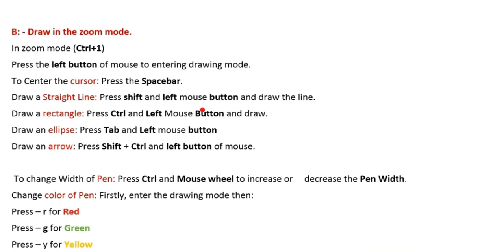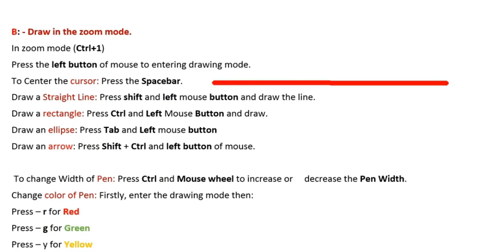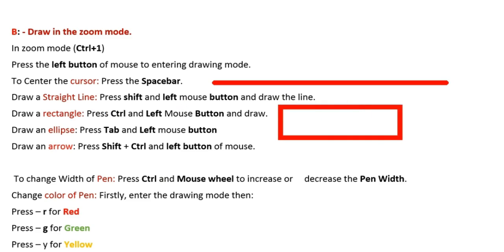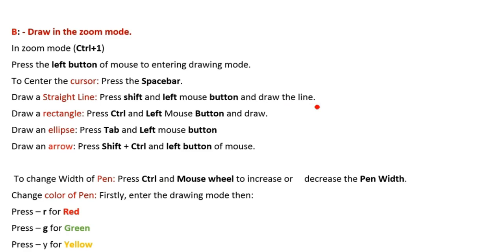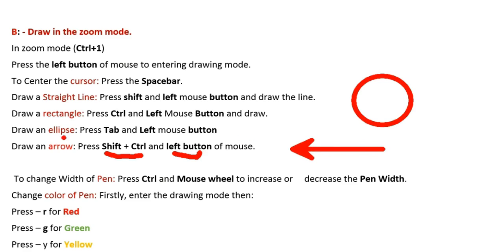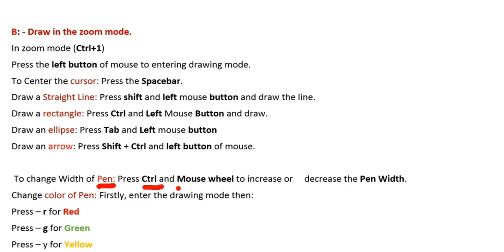To draw a straight line, press Shift and the left mouse button. To draw a rectangle, press Ctrl and the left mouse button. To draw an ellipse, press Tab and the left mouse button. For an arrow, press Shift plus Ctrl and the left mouse button. Press Ctrl plus the mouse wheel to change the cursor width.